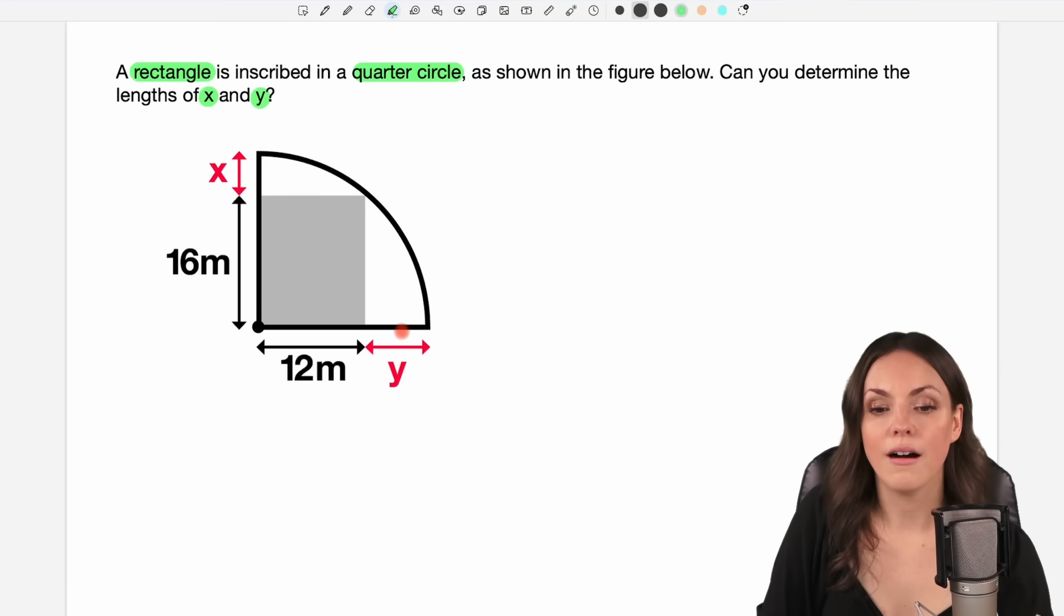x and y are part of the radius of our quarter circle, right? So this from the center to the edge of the circle, this is my radius. And if I knew the radius, then I can find the length of y as well.